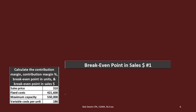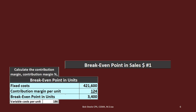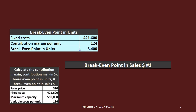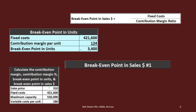Next we calculate the break-even point in sales dollars — how many dollars in revenue we need to bring in to cover both variable and fixed costs. You might think that since we need 3,400 units and each sells for $310, we simply multiply those two together to get the revenue. That's one way to do it, and we'll show that on the next slide. But the standard formula — often more useful in certain situations — is fixed cost divided by the contribution margin ratio.